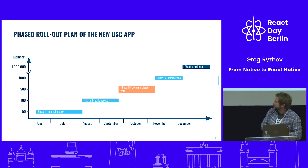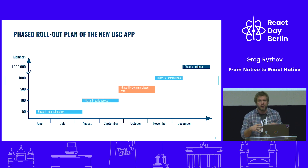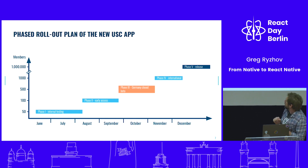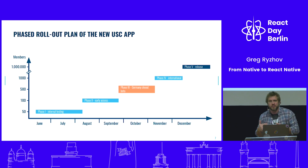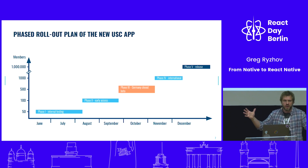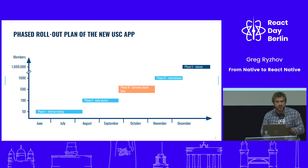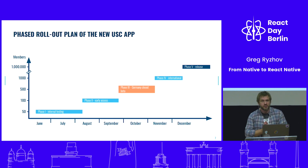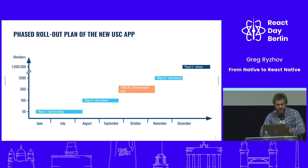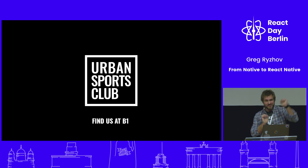In terms of how we're rolling it out: we started an internal beta in June with only our staff members. From August we started opening up to different member groups — 50 people first, then in October with 500 people. Now it's open internationally and we'll start rolling it out to production by the end of this month. You can find us here at Stand B1. You can join the beta program if you'd like to try out our beta app and provide us with valuable feedback — we'd highly appreciate hearing from you. Thank you very much.